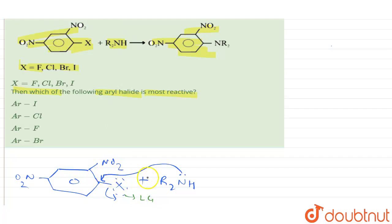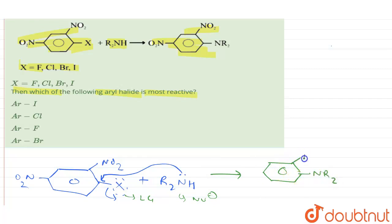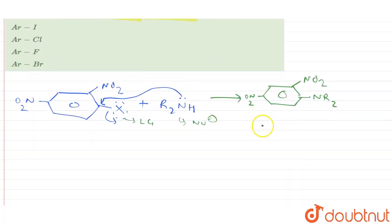The X group is removed and the product you get has NR₂, which acts as a nucleophile. So the product will have NR₂ and everything else remains the same. This is basically aromatic bimolecular nucleophilic substitution — an ArSN2 type of reaction.